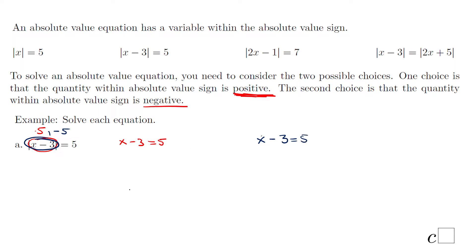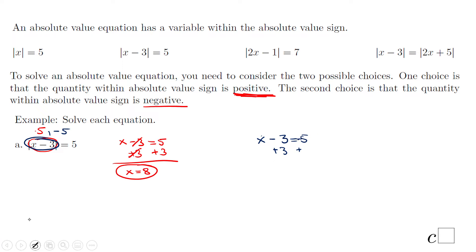So you have to write two equations, and now we're going to solve each one. These are simple one-step equations. I'm going to add 3 to get rid of the minus 3 — don't forget to do the same on the other side — and we have the first solution: x equals 8. For the second equation, this one is negative 5, and we add 3, ending up with x equals negative 2.